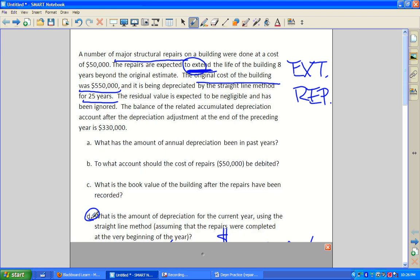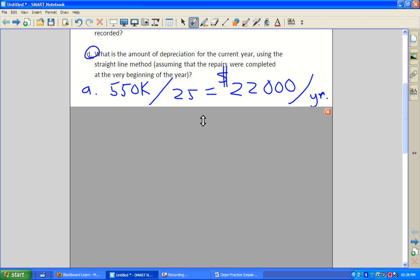First of all, leading up to this is, what's the depreciation in all the past years? Well, it's pretty straightforward, actually. We've got $550,000, no residual value. It's negligible for 25 years, so I think that's pretty straightforward. So let's just go take a look at that. I think that looks like this. $550,000 divided by 25 years gives me $22,000 per year. So A is pretty easy. Straightforward.